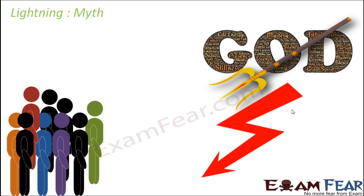You would have seen how lightning happens — it is like a spark of light in the sky, and sometimes the spark is so intense that it actually brightens up everything. It seems to be something very interesting happening out there in the sky. In ancient days, people did not know the scientific cause behind lightning — what exactly was happening in the sky to cause it.